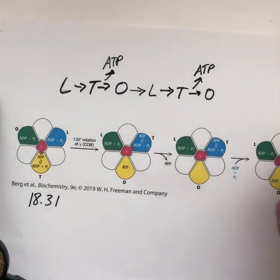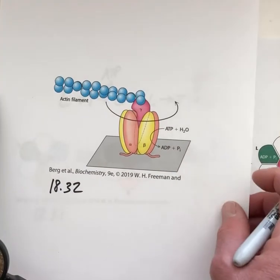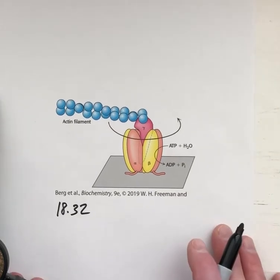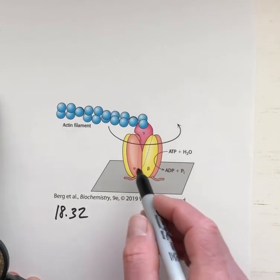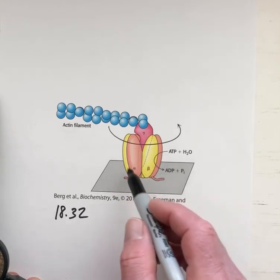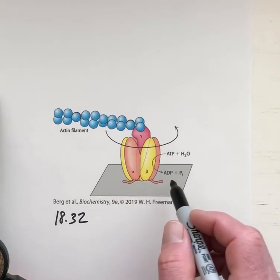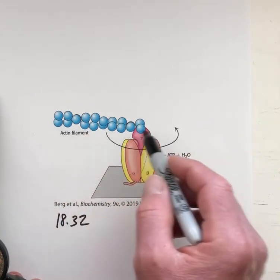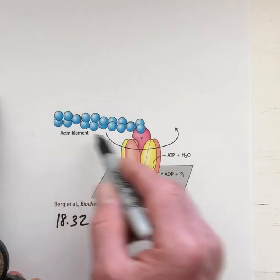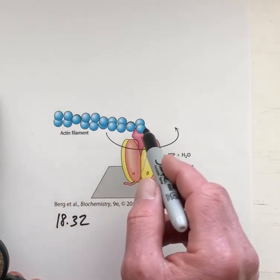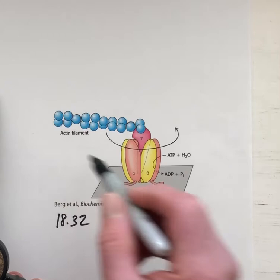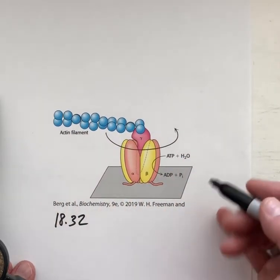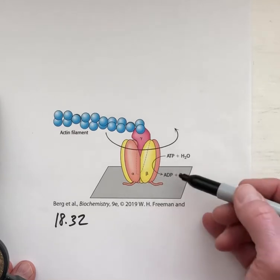We know that the whole thing is rotating from an experiment described in figure 18.32, where on a microscope slide, they've glued the alpha-3-beta-3 hexamer, and then they've attached to the gamma subunit a filament of actin. That's so we have something we can actually see very clearly. The scientists decorated this actin filament with fluorescent antibodies so they could see it with a fluorescence microscope.